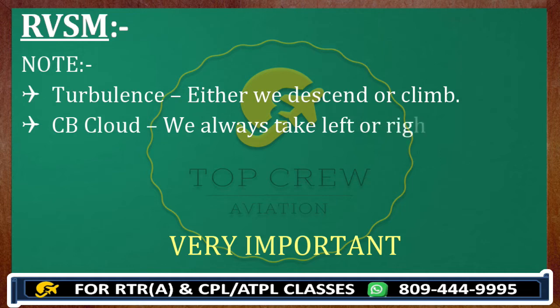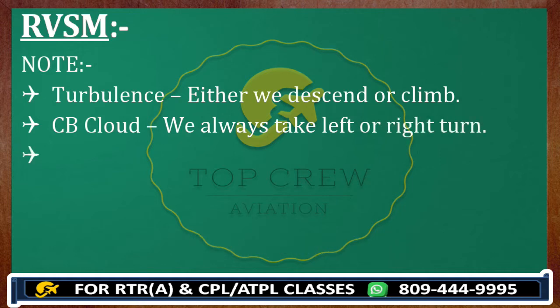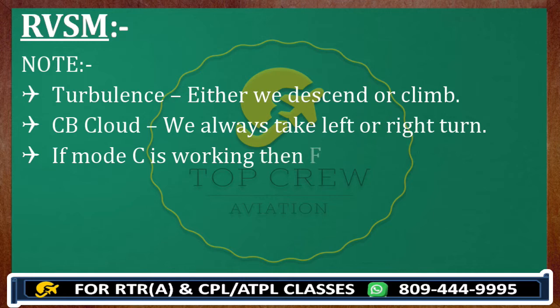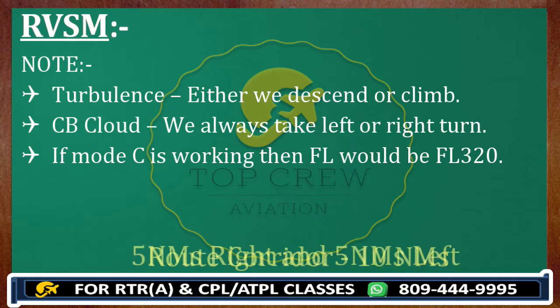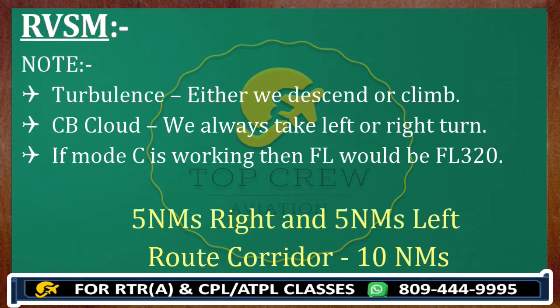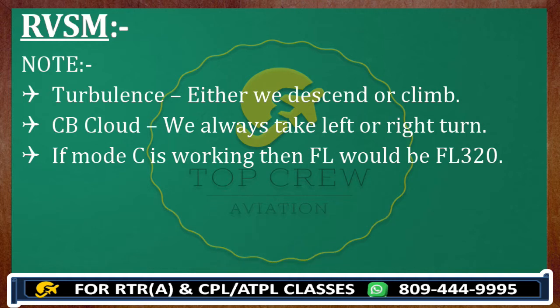We are going to discuss Mode C. As I told you in previous example 2, if Mode C is working and you are going to rejoin at Sierra Golf, then your flight level would be 320 — wherever you did leave the route corridor. We will discuss about route corridor — wherever you are flying, let's say point A to B, the route corridor is 5 nautical miles right side and 5 nautical miles left side, so a 10 nautical mile corridor known as the route corridor.